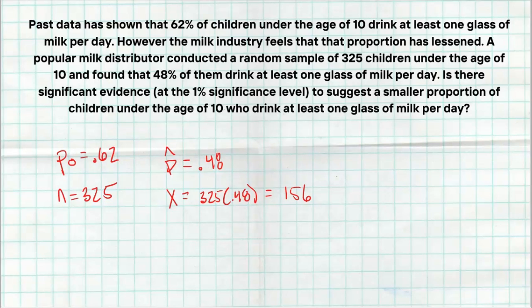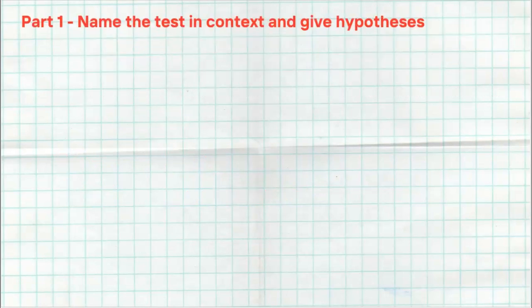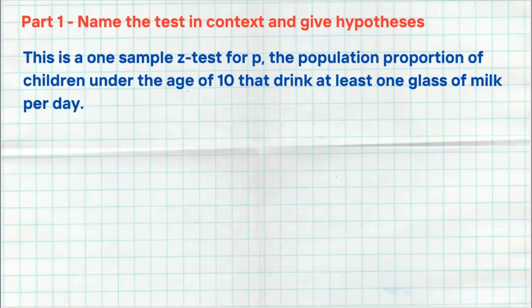All right, so let's walk you through the, I called four steps on the AP exam. They use three sections, but as long as you follow my four steps, it's all there. The first step is to name the test in context and give the hypotheses. This is all outlined on that formula cheat sheet resource guide I was telling you about.